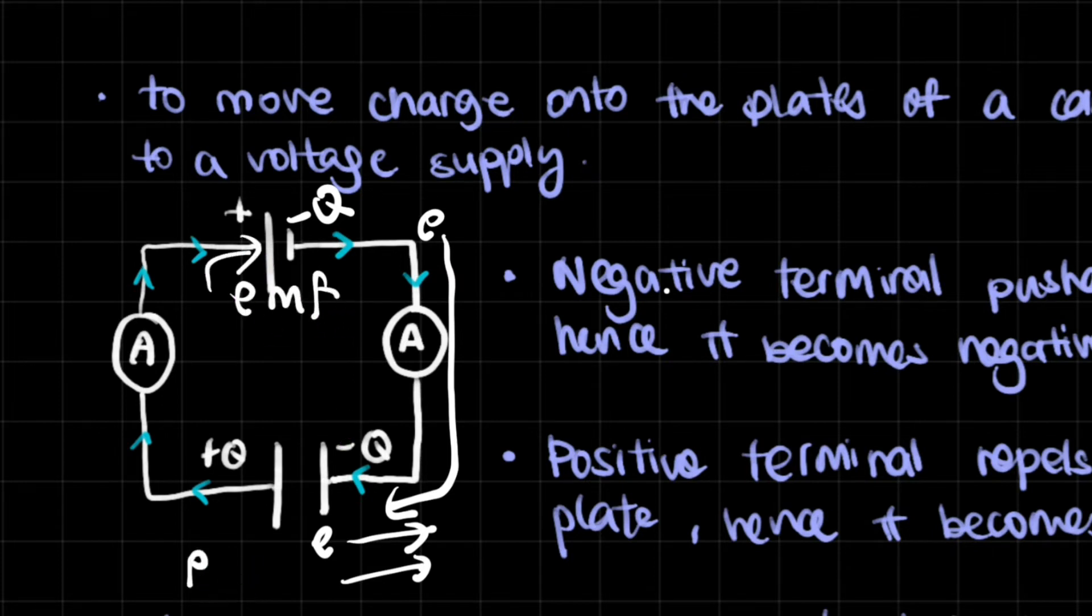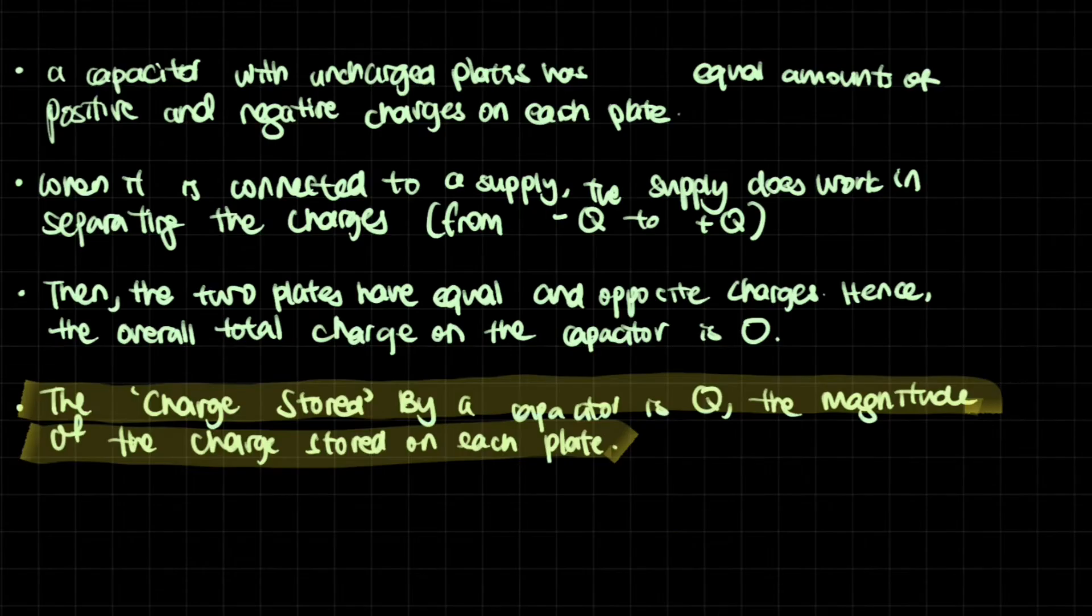And the potential difference is for the component in the circuit. A capacitor with uncharged plates, so you didn't connect it to any sort of circuit yet, they have equal amounts of positive and negative charges on each plate.